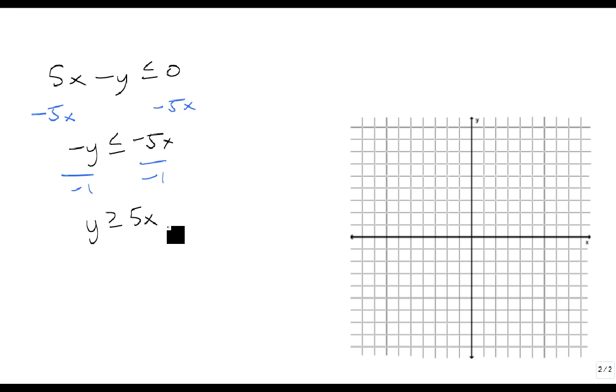And so now that we've done that, we treat this as an equation, y equals 5x. So we start at (0,0) and we go up 5 over 1, up 5 over 1, down 5 back 1, down 5 back 1. Notice it's a solid line going through those points.